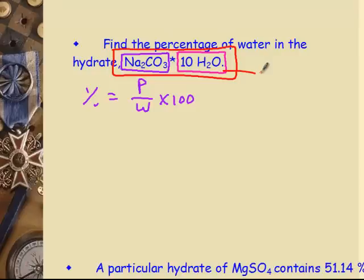We have 10 water molecules in this, so we need to find the mass of 10 water molecules for the part. Then I have to find the mass of the Na2CO3. The whole thing is the mass of both added together. I need 10 waters. Water is 18, so 10 times 18 is 180. Na2CO3, we have two sodiums, so 46, 12, and 48. Add them up, so we have 106. This is 106, that's 180.